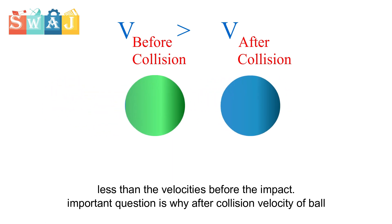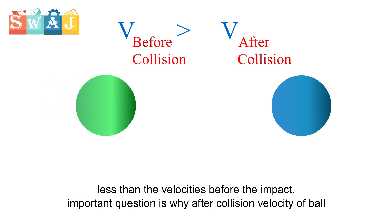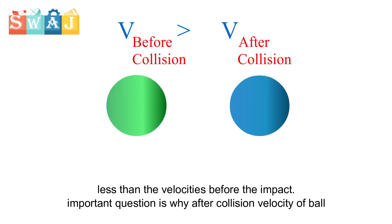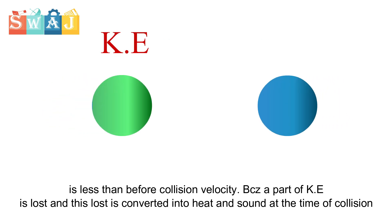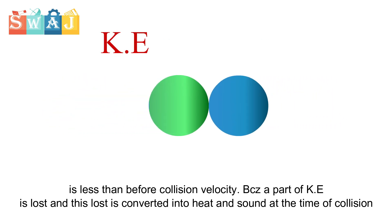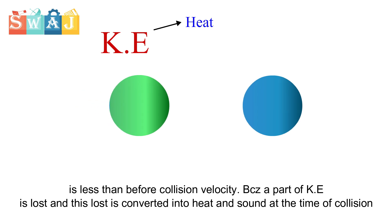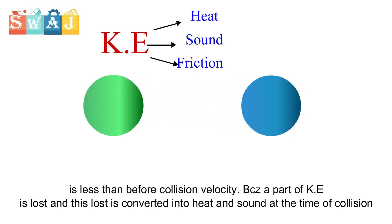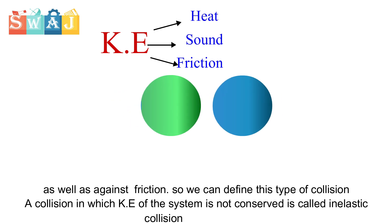An important question is: why is the velocity of the ball after collision less than before collision? Because a part of kinetic energy is lost, and this loss is converted into heat and sound at the time of collision, as well as against friction.